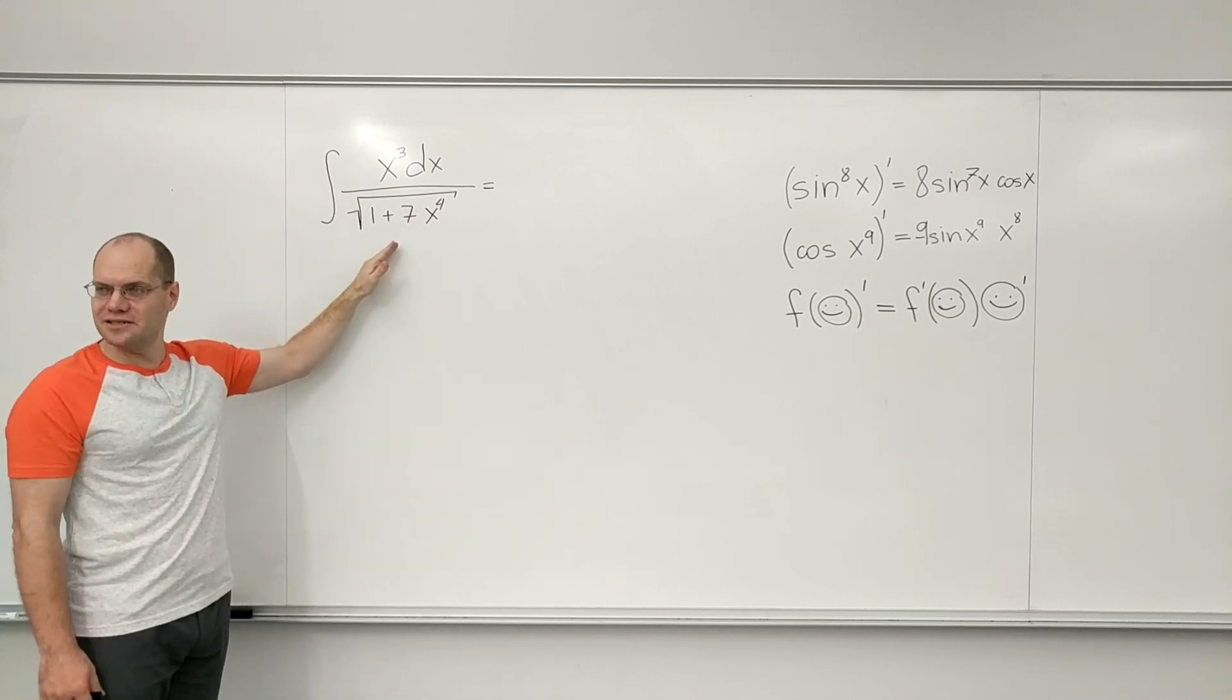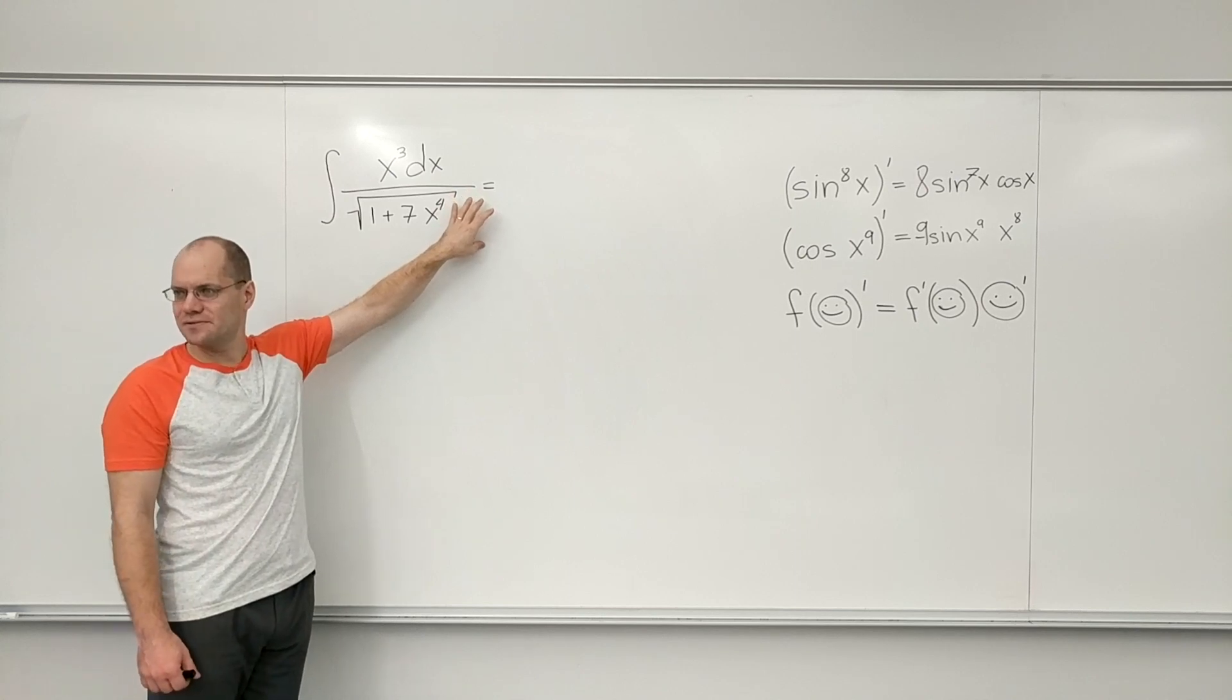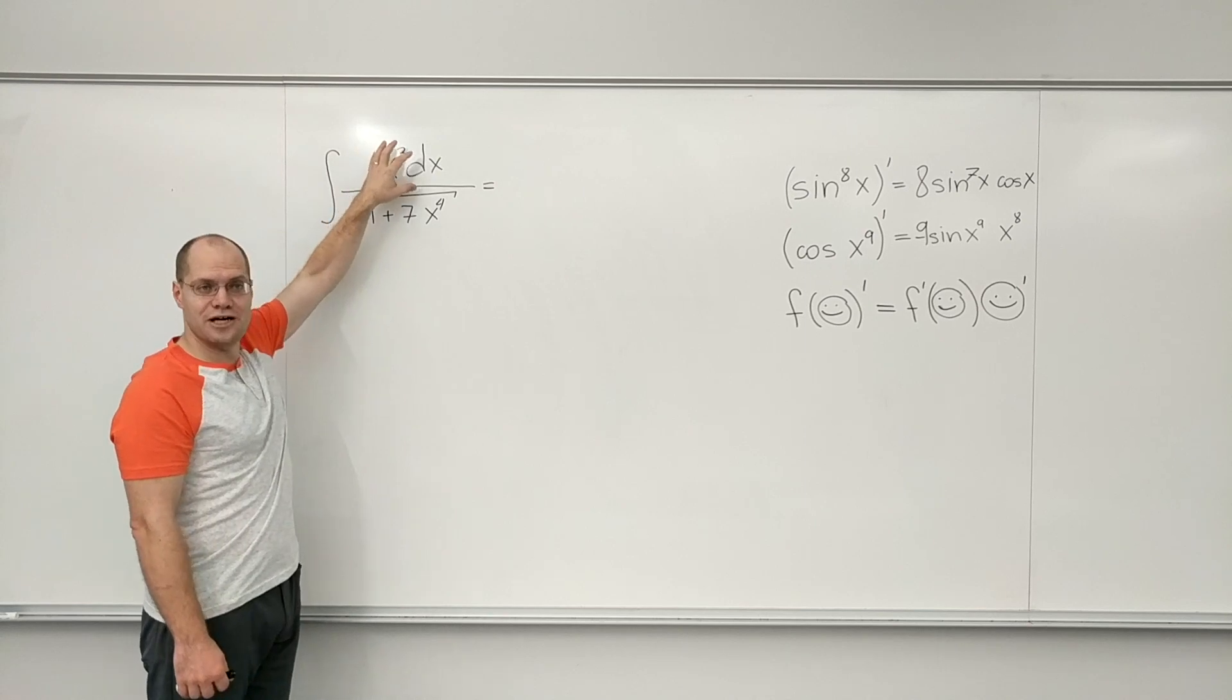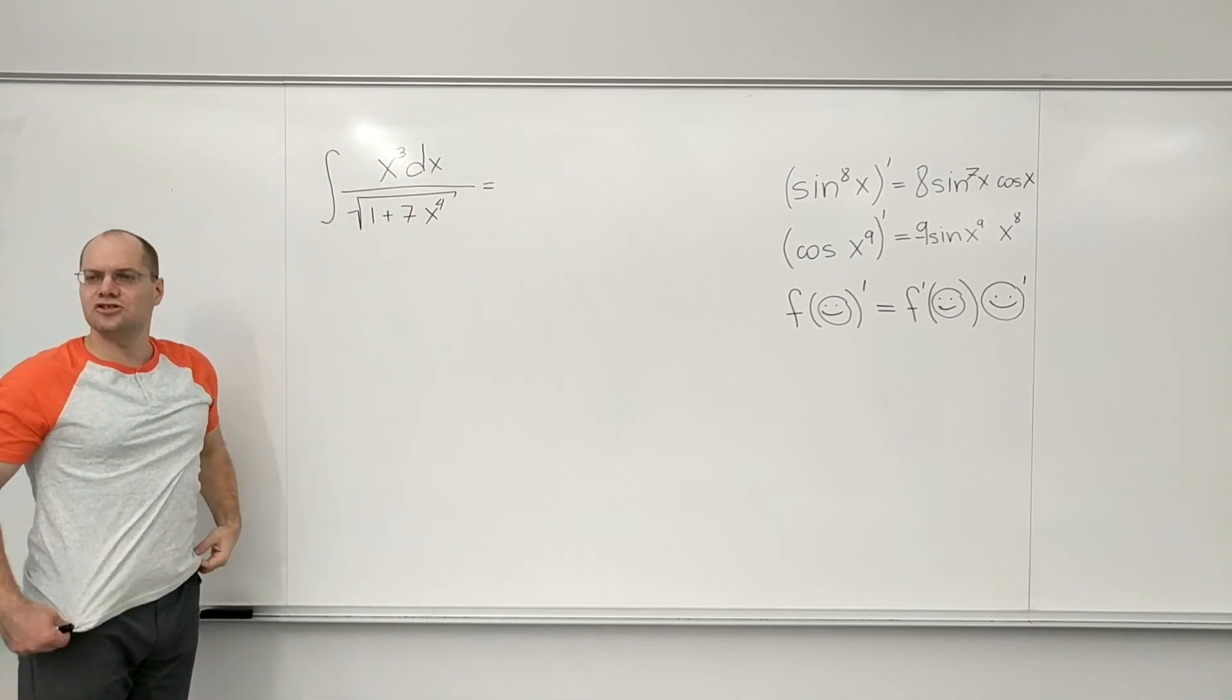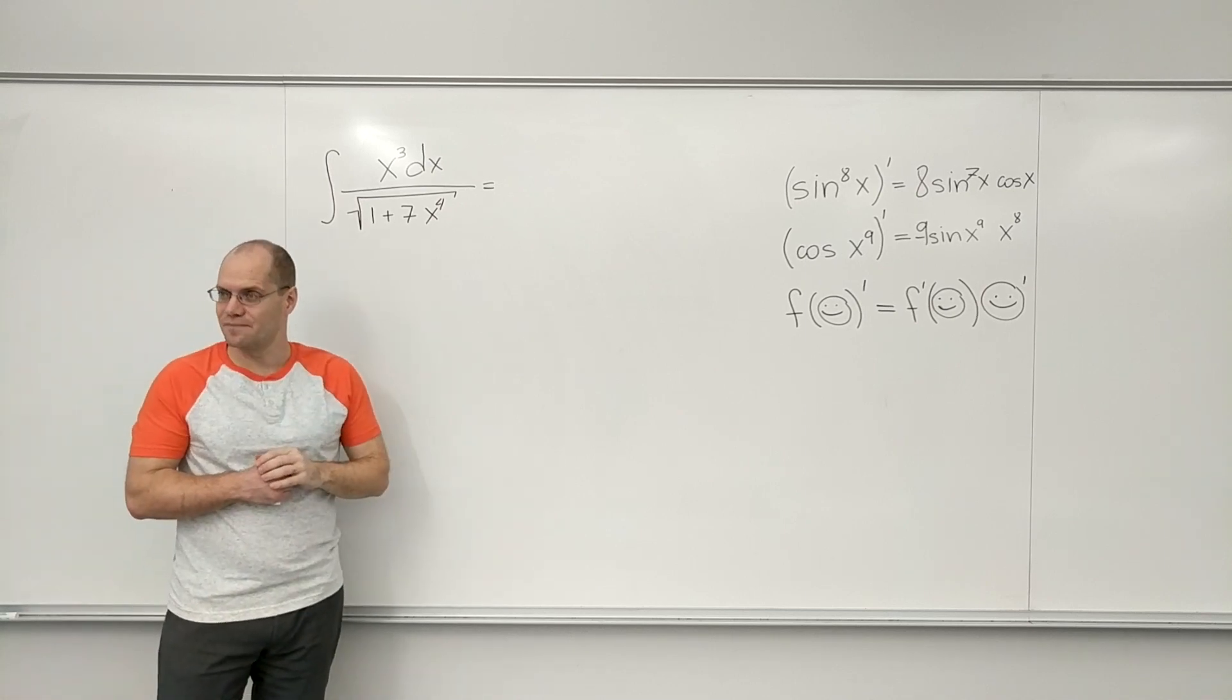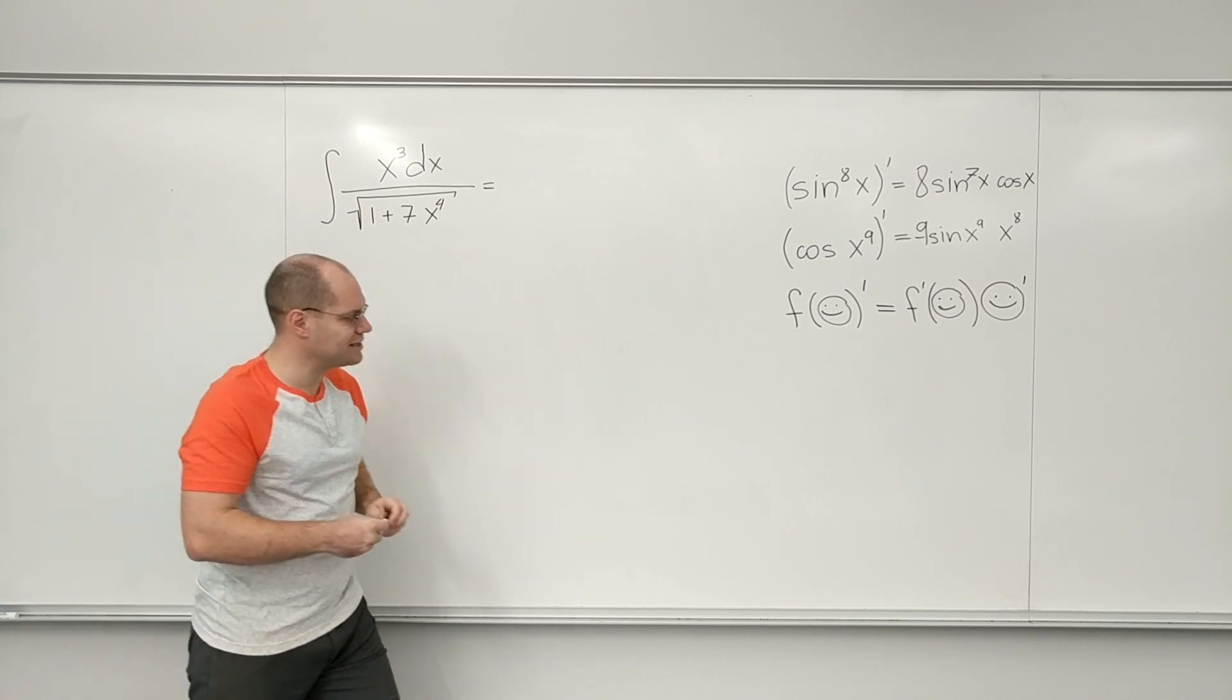When I look at this integral, my eye is drawn to the denominator because that's where the complexity happens. So for now, I'm not paying attention to this. I'm hoping this will just work out in the end. And I tell myself that what I'm seeing is 1 over the square root of x. Not of x, of something. I'm looking at 1 over the square root. And I recognize it.